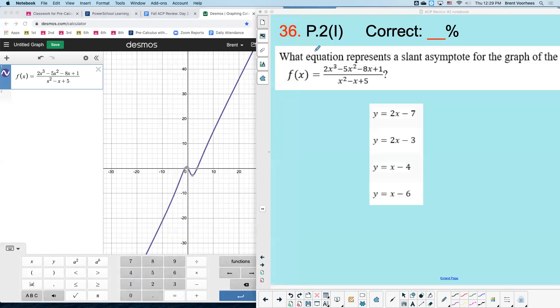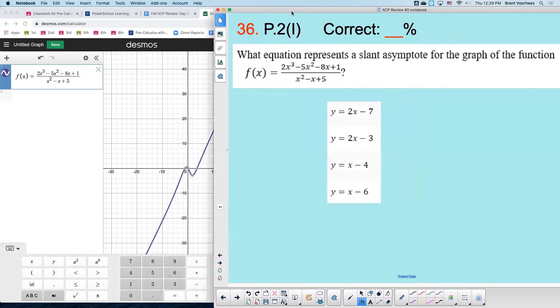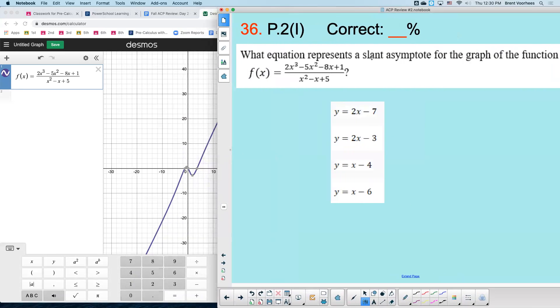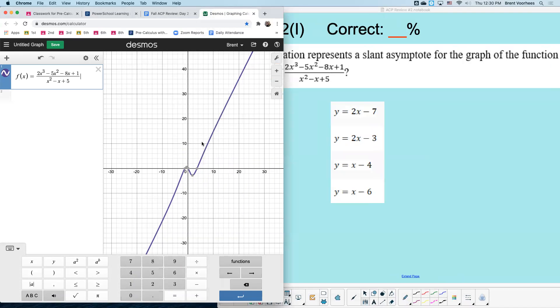The problem states, which equation represents a slant asymptote? Slant means like diagonal. So one of these lines will represent this diagonal portion. It doesn't necessarily represent the middle, but it represents the diagonal portion. So if I just graph these answer choices, one of these will kind of overlay the slant pieces.